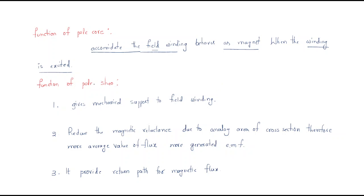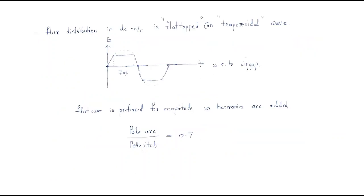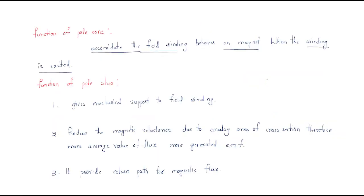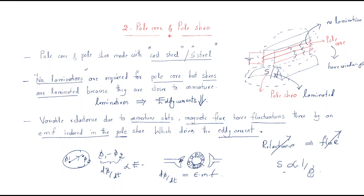The functions of the pole shoe: first, it gives mechanical support to the field winding. The pole shoe supports and holds the winding around the pole core in place.